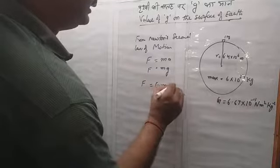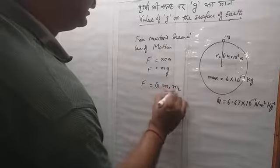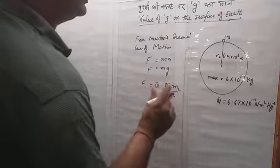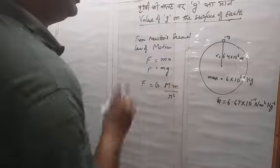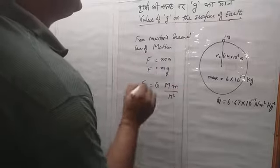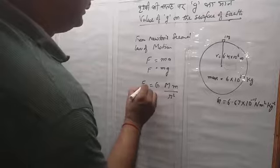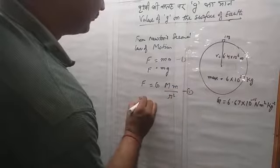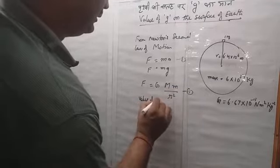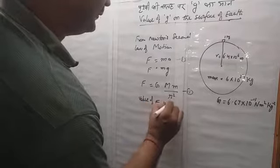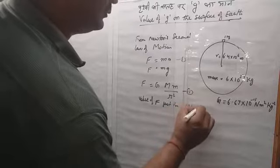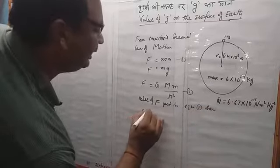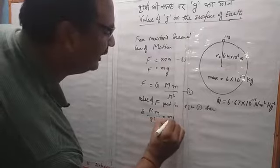The gravitational force formula is F = G·M₁·M₂ / R². If we talk about mass on Earth, M₁ is the capital M for Earth and M₂ is the small m for the object. We replace F's value — putting the value of F into equation 1 — we get G·M·m / R² = m·g.